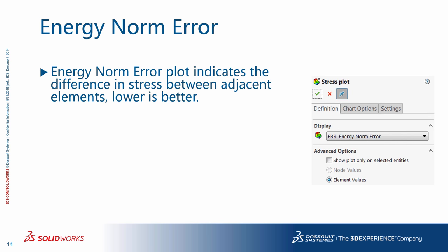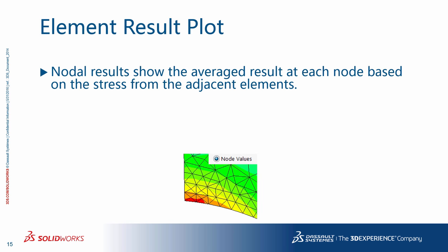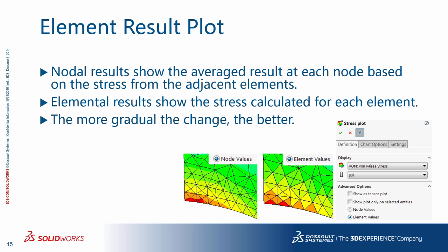Energy norm error plot indicates the difference in stress between adjacent elements — lower is better. You can activate this under the stress plot. This is not an absolute test of convergence, but a high error in areas of concern should be investigated. Nodal results show the average result at each node based on the stress results calculated from the adjacent elements. On the stress plot definition tab under advanced options, you can change the default node values to element values, which shows the stress calculated for each element. The more gradual the change, the better, because more elements means you are capturing the behavior at the element level more accurately and with less averaging.